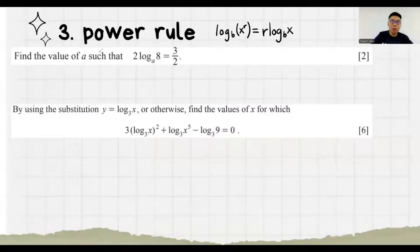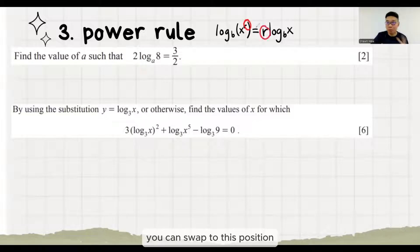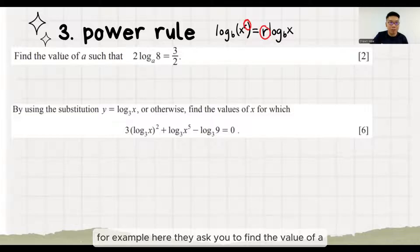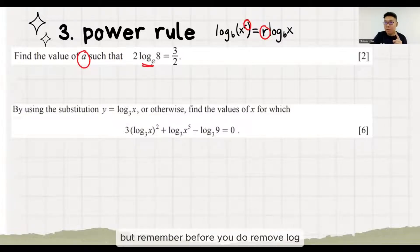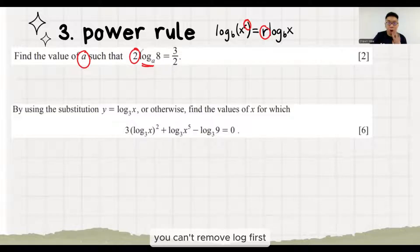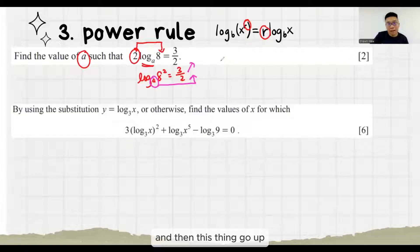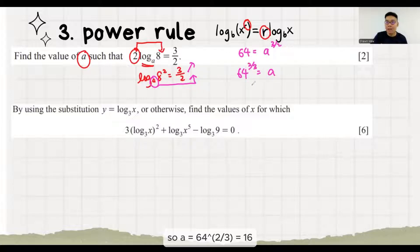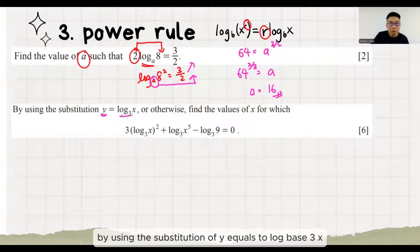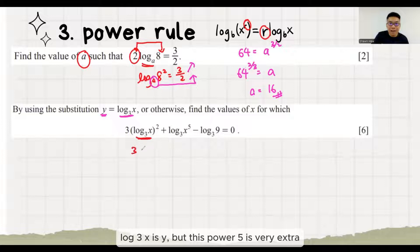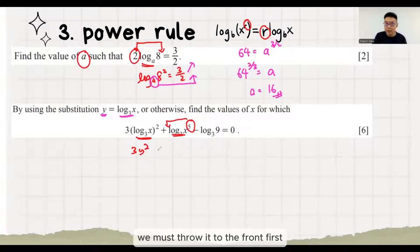Next technique: we go to the power rule. Whenever you have a power here, you can swap it to the front — these two positions can interchange. For example, they ask you to find the value of A. We can remove log, but remember, before you remove log, you need to ensure nothing is in front. If there is any number in front, you can't remove log first. So you must change this to the power position first. Then only you can throw the base to another side. 8 squared is 64. 64 equals A to the power 3 over 2. So A equals 64 to the power 2 over 3, which is 16. Next, using substitution of Y equals log base 3 of X. Log 3X is Y. This power 5 is extra — we must throw it to the front first. So it becomes 5Y. Many students directly write Y power 5, which is wrong. This power 5 only belongs to X — that's why you need to throw it down first.